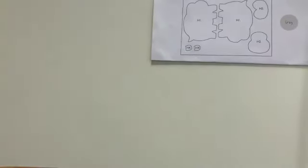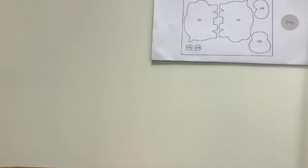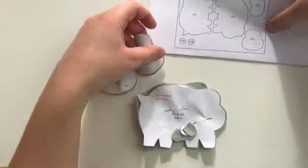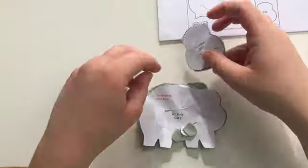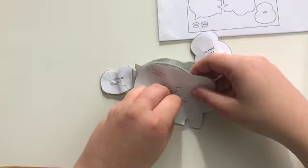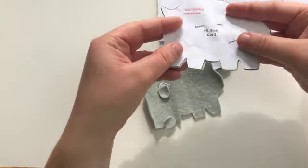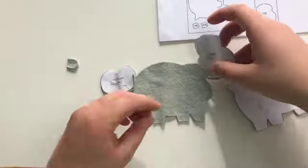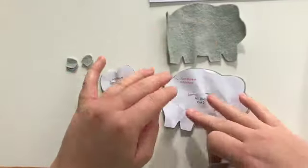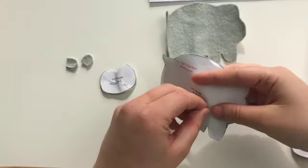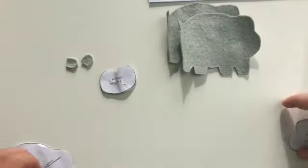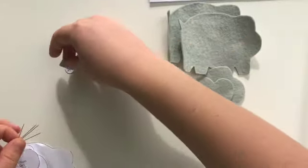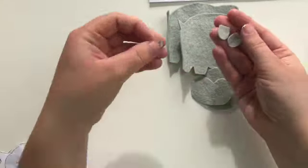I'll show you some pieces I cut out earlier. This is the hippo, and it will say on each piece how many you need. For example, this is the body and it says cut two, so I've got my two bodies here. Now I can just take the pins out. Got my head, mouth, and my two ears.